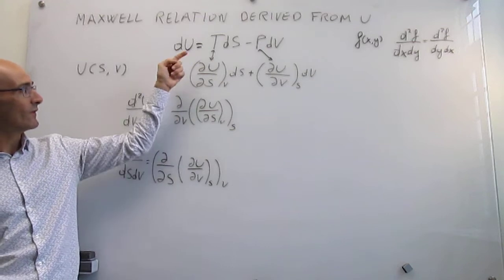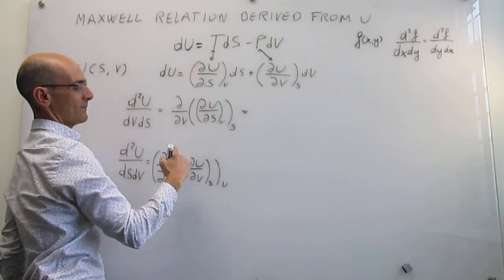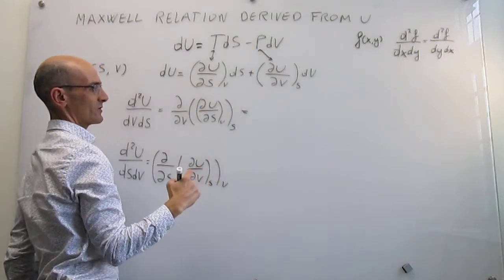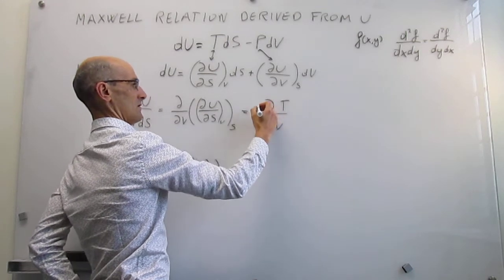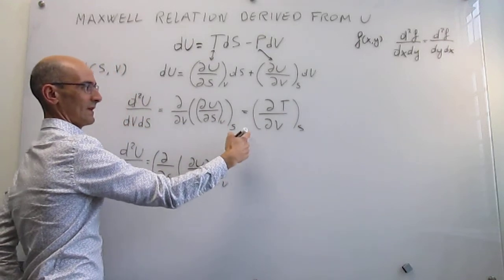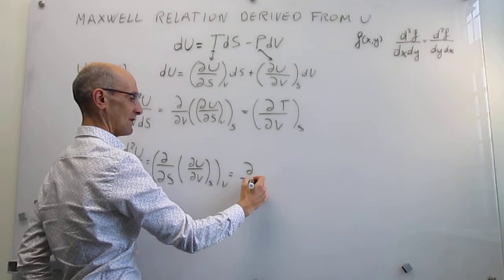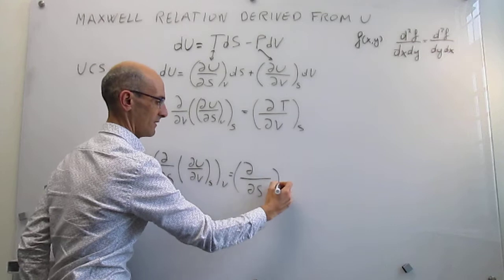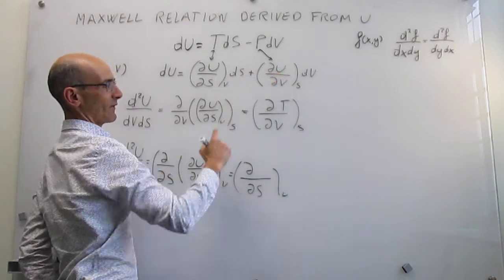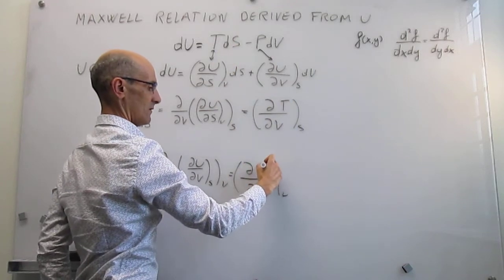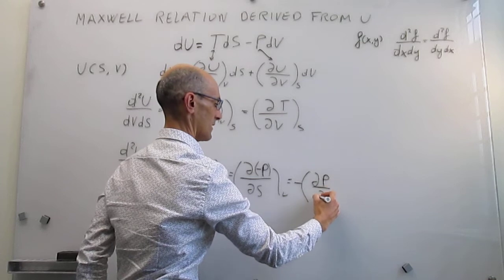We actually now have expressions for each of these first derivatives from the equality of the fundamental equation and the total derivative. The first derivative of U with respect to entropy at constant volume is simply the temperature, and the first derivative of U with respect to volume at constant entropy is simply minus pressure. So we can write the partial derivative of temperature with respect to volume at constant entropy, and the partial derivative of minus pressure with respect to entropy at constant volume.